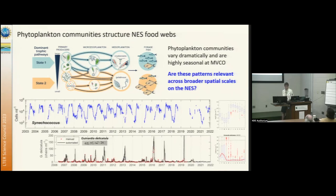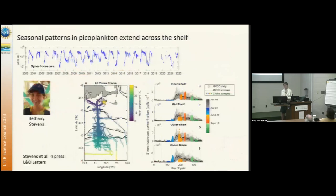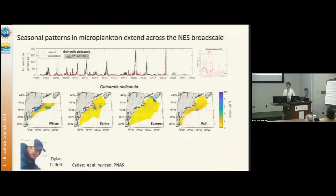Using similar observational techniques to those we use at the observatory, we're now going across the shelf. This is the example for the picocyanobacterium Synechococcus, where graduate student Bethany Stevens has been able to show that yes, indeed, the seasonality we observe in Synechococcus at the nearshore observatory does extend all the way across the shelf. The amplitude is modulated, but exactly the same seasonal patterns are showing up across the whole region, suggesting common seasonal regulation of this organism.